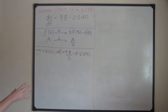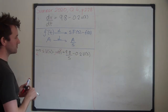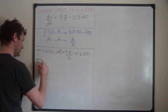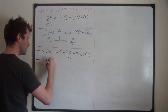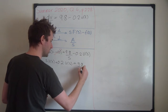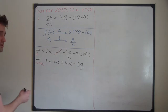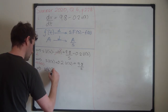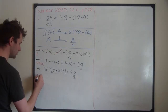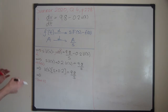The third step is to solve for big V(s) — this is just an algebra equation, which is the whole point of Laplace transforms. Add 0.2 big V(s) to both sides to get s times big V(s) plus 0.2 times big V(s) equals 9.8 divided by s. Take out the common factor of big V(s), then divide both sides by (s + 0.2). After taking the Laplace transform, the remaining steps are just algebra.